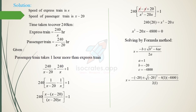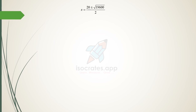Substituting the values: x equals 20 plus or minus square root of (20 squared plus 4 times 1 times 4800), divided by 2. That is, x equals 20 plus or minus square root of (400 plus 19200) divided by 2, which gives x equals 20 plus or minus square root of 19600 divided by 2. Since the square root of 19600 is 140, x equals 20 plus or minus 140, divided by 2.